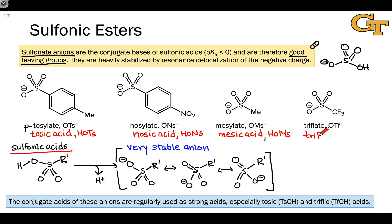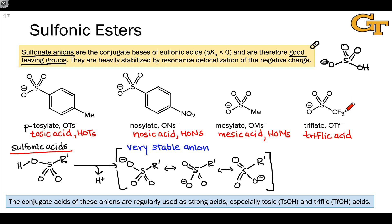The conjugate acid of triflate is called triflic acid — this is particularly nasty stuff due to the withdrawing effect of the CF₃ group. Triflic acid is an even stronger acid than sulfuric, because the CF₃ group is even more electron-withdrawing than the hydroxyl group by induction.